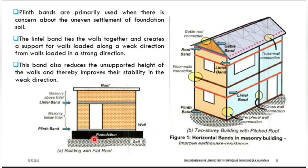The band also reduces the unsupported height of walls, thereby improving stability. If you don't have this band, the wall has a total height of, say, 3 meters. When you provide this band, the wall is divided into two — say 2 meters below and 1 meter above. So you are reducing the height, which reduces the seismic force on the building — masonry above lintel and masonry below lintel.